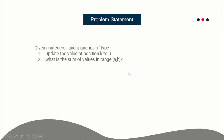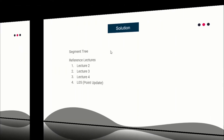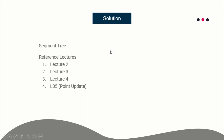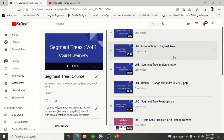Range sum you can easily calculate using a segment tree, and this is a point update. So basically this problem teaches you two important things: range sum using a segment tree and a point update. Both of them I have already explained in my segment tree course.